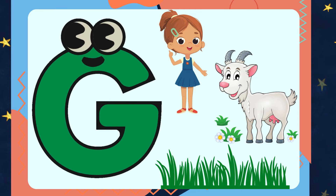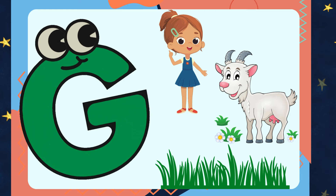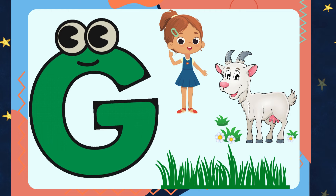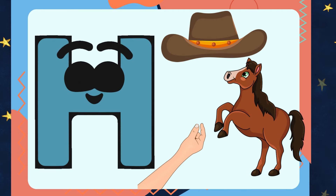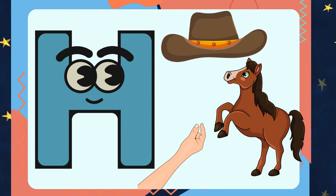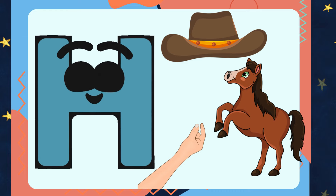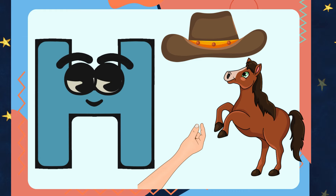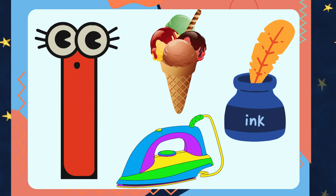G is for Girl, Goat, Grass. H is for Hat, Hand, Horse.